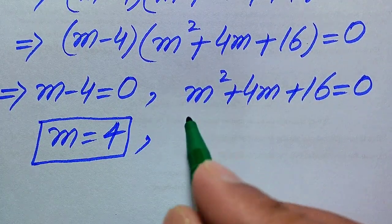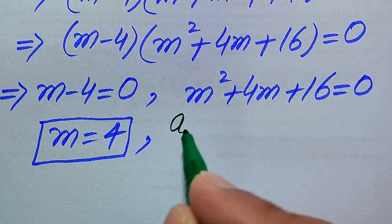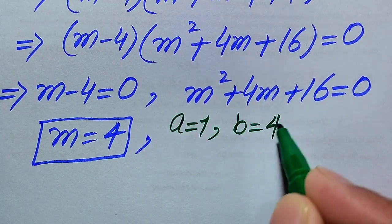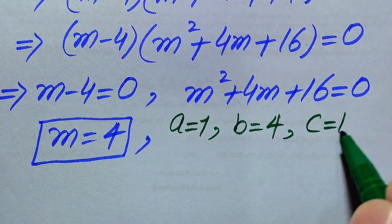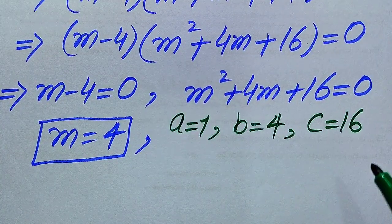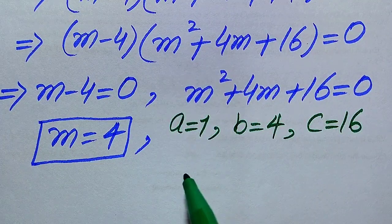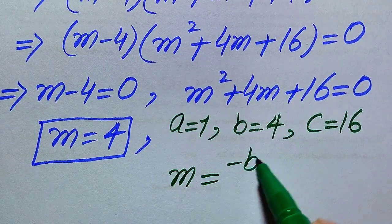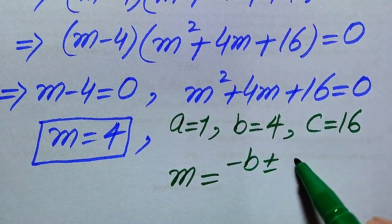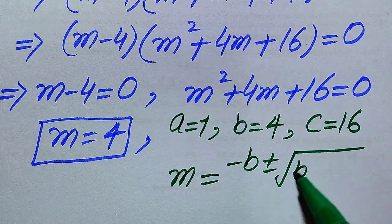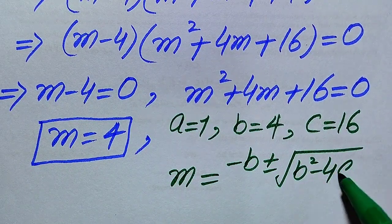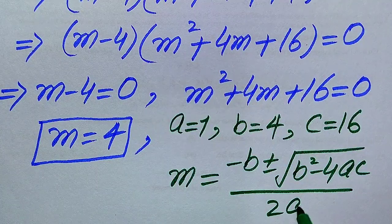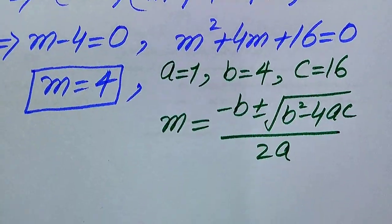First we write the coefficients: a equals 1, b equals 4, and c equals 16. The quadratic formula is: m equals negative b plus or minus square root of (b squared minus 4ac), all divided by 2a.